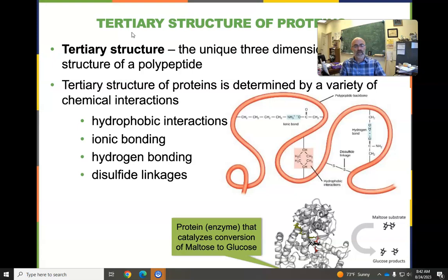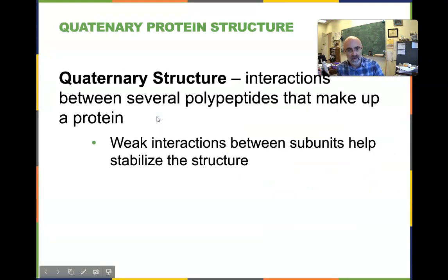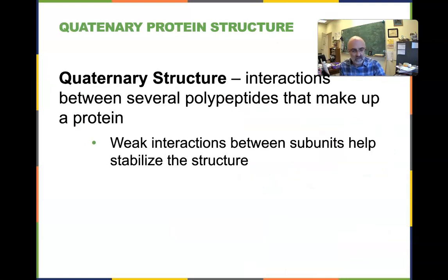Proteins are almost always three-dimensional, and that three-dimensional shape is critical to what their job is. Then we have the quaternary structure, which is several of these folded polypeptides coming together — they glom together into a superstructure.